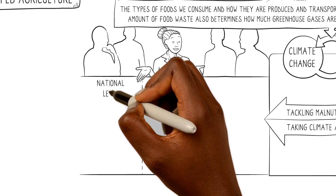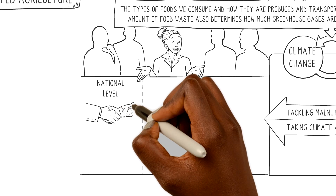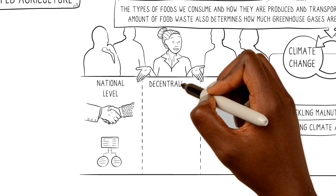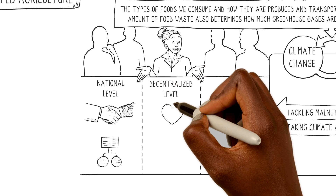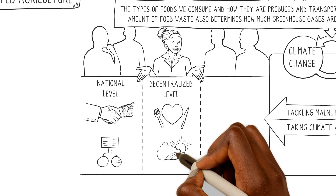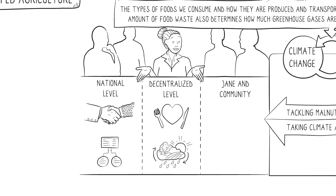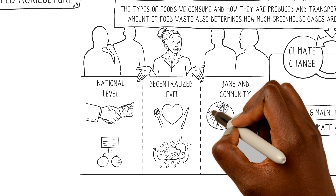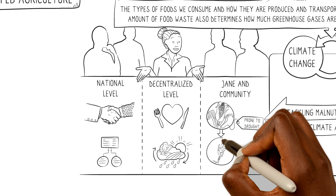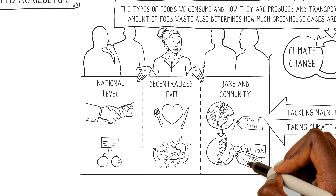At the national level, the government could support inter-ministerial collaboration between multiple actors and provide comprehensive policy frameworks. At the decentralized level, extension officers and health officers can promote healthy and sustainable diets and climate-smart farming techniques. Jane and her community can also take action on their own — instead of growing maize, which is prone to drought, Jane could consider traditional grains like sorghum and millets, which are both nutritious and drought-tolerant.